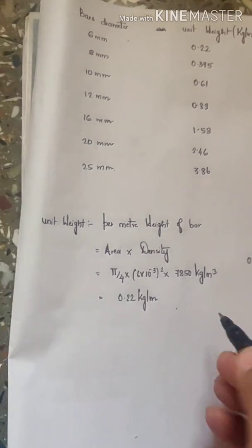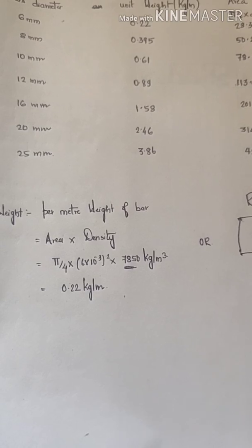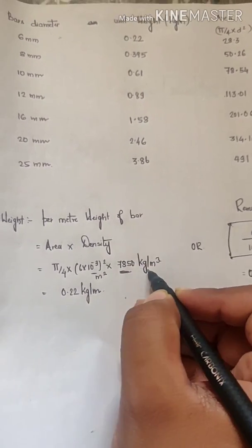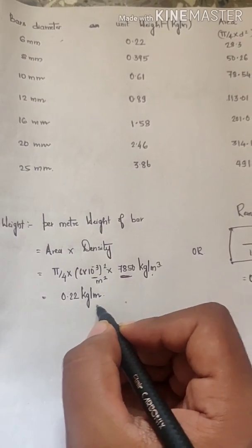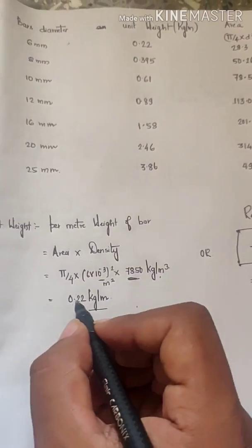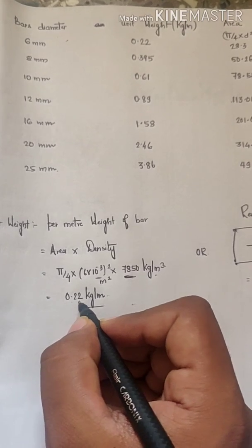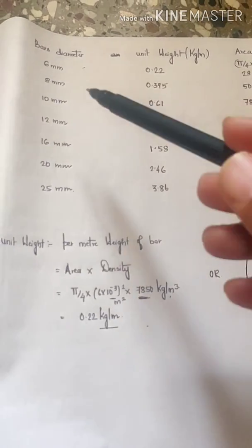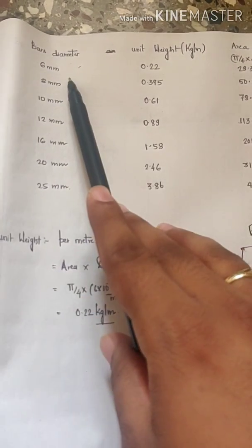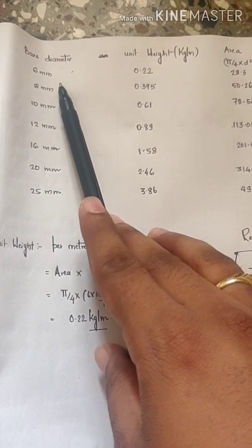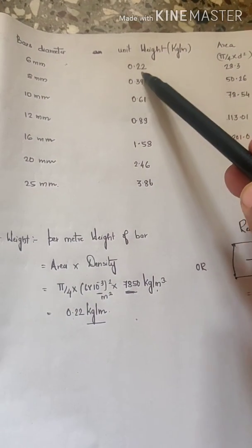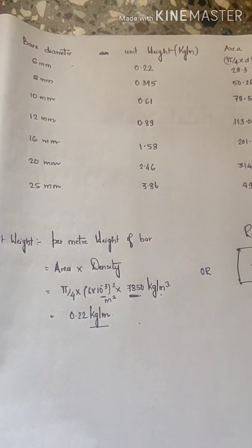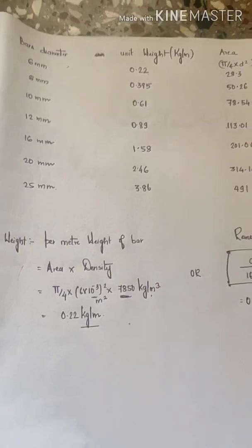We have already calculated what is area. We know what is the density of steel, it is 7850 kg per meter cube. So area is in meter square and this is in meter cube, so we will get kg per meter. So 0.22 kg per meter indicates the unit weight of 6mm diameter bar.